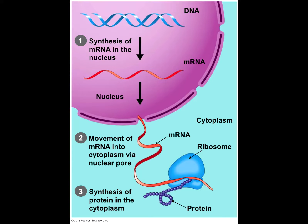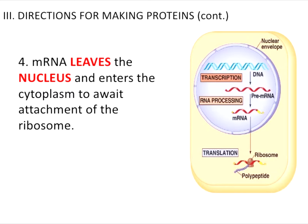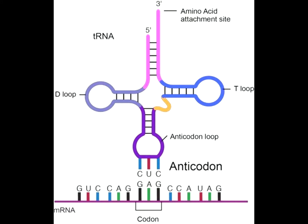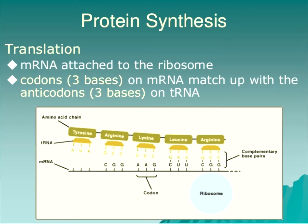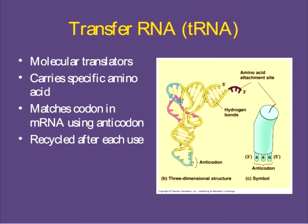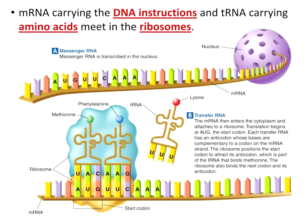The mRNA goes to the ribosome, three bases at a time. Step four: tRNA matches up with the codon on the mRNA. Then in the last step, tRNA releases the amino acid, which joins the growing chain of amino acids being built.